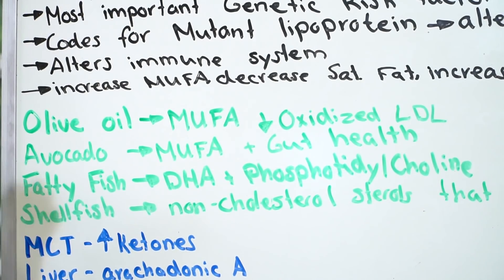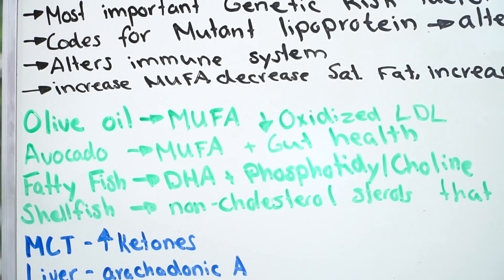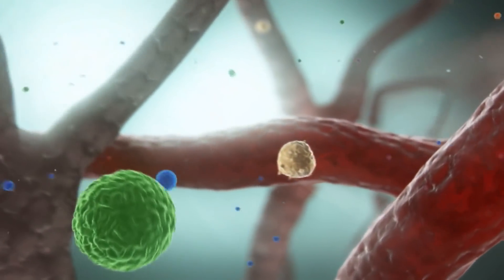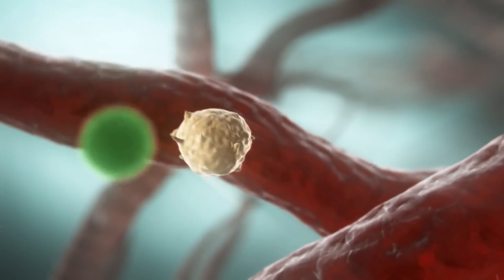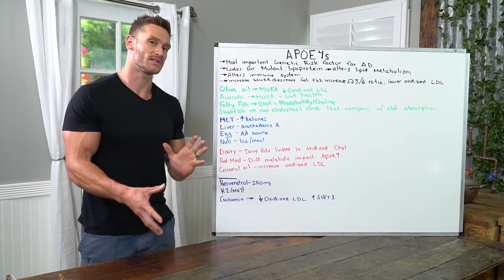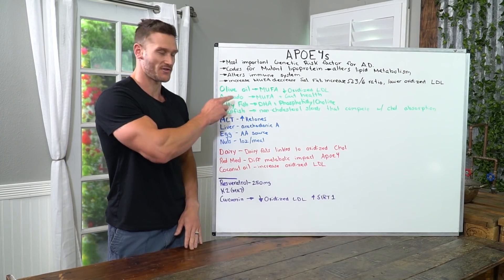Avocado. You can eat tons of avocado. High levels of monounsaturated fatty acids again, but also the gut health link. Because we alter the immune system with APOE4, if we take care of our gut and we get the right gut biome, we can actually affect the immune system in a positive way. So good fibers there that can do that.